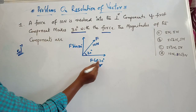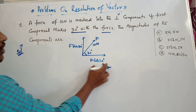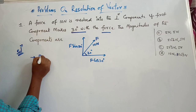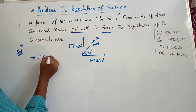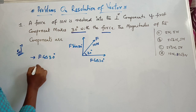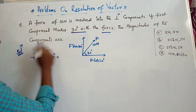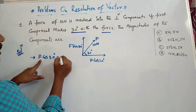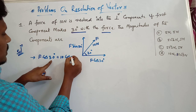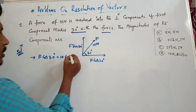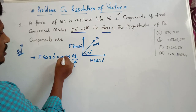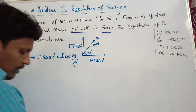There are two components: the horizontal component and the vertical component. First, let us solve the horizontal component, that is F cos 30°. We can write this as 10 × cos 30°. We know that cos 30° = √3/2, so this gives 10 × √3/2 = 5√3 Newtons.